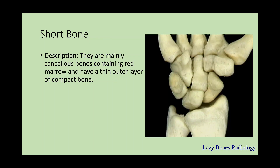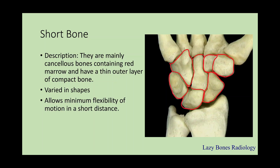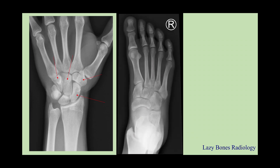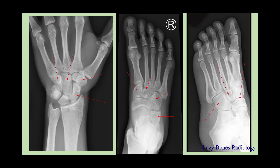Next are short bones, which are mainly cancellous bones containing red marrow with a thin outer layer of compact bone. They vary in size — for example, here on the right hand side are the carpal bones. These small bones allow minimal flexibility within a short distance. Examples include the carpal bones and the tarsal bones, all different sizes but all short bones.